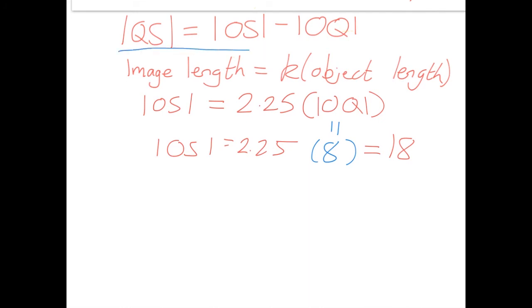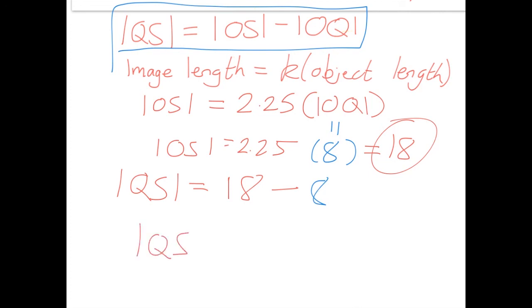So then, using this equation up here, we get QS, what we're looking for is OS, which is now 18, minus OQ, which we had was 8. So that means QS is equal to 10. And that's our final answer.